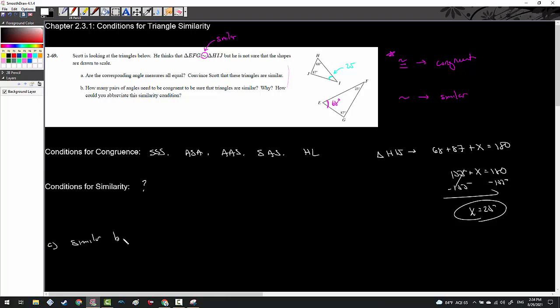They are similar by what I'm going to call angle, angle, angle, AAA. Now, a couple of things to note about this. AAA did not work for triangle congruence. Just because all three angles are the same didn't have to mean that the triangles were exactly the same, but they can be similar that way. And so from here, we can say similar by angle, angle, angle.